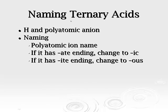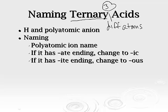Ternary acids is where it gets a little more interesting. Ternary refers to three, and this is typically hydrogen and a polyatomic anion, which means you have at least three different atoms or elements present in the compound. For naming, you go based on the polyatomic ion name: if it has an -ate ending, you change the acid name to -ic; if it has an -ite ending, you change the acid name to -ous. This is something you'll want to write down to help yourself remember.